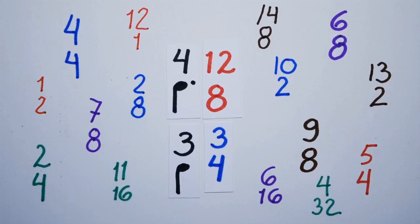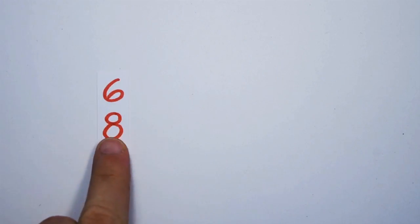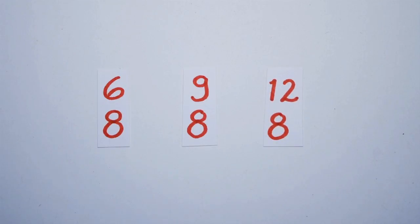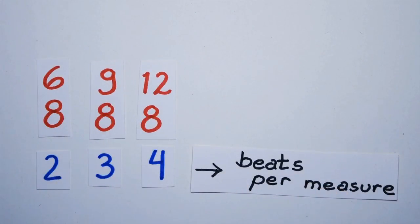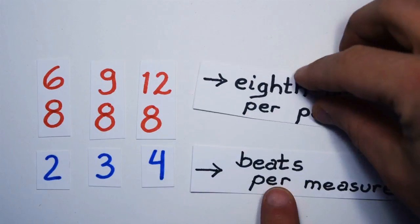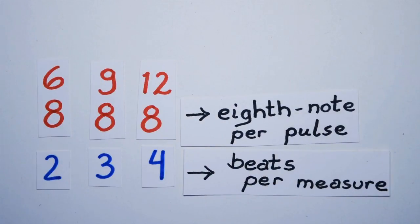You just need to remember, when the top number of a time signature is a multiple of three, except three itself, you're dealing with compound meter. The top number divided by three gives us the number of beats per measure. The bottom number tells us what kind of note gets each pulse within the beat.